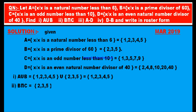B intersection C: B = {2, 3, 5} intersection C = {1, 3, 5, 7, 9}. The common elements are 3 and 5. Therefore, B intersection C = {3, 5}.